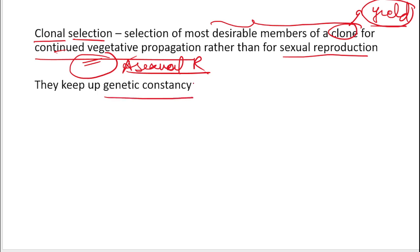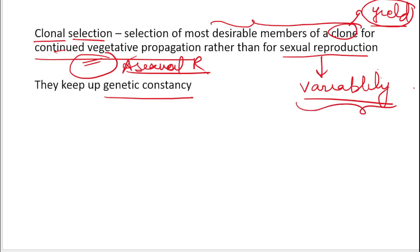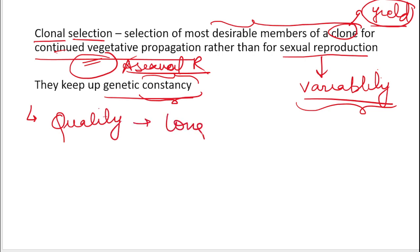In clonal selection, there is genetic consistency because it involves asexual reproduction. In sexual reproduction there is genetic variability — because there are two parents, characters are not constant. But in a clone, there is consistency. The quality traits remain present in the plant for a long time, which is one of the merits of clonal selection.